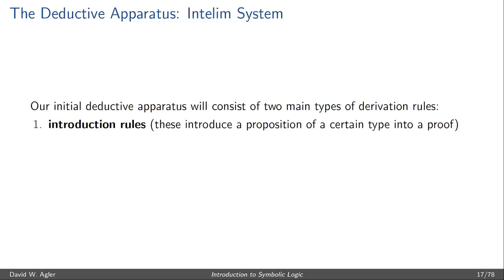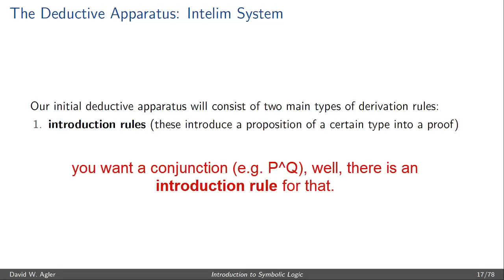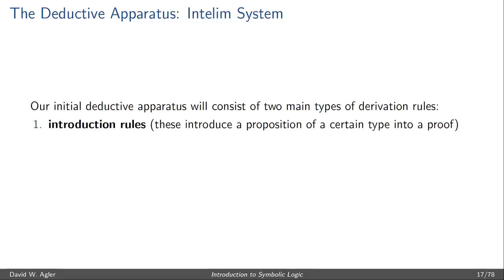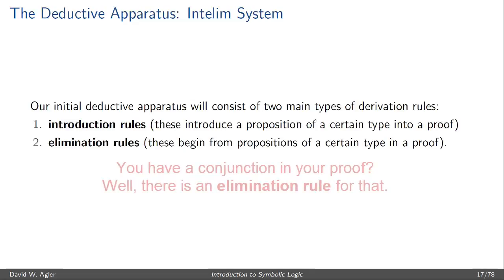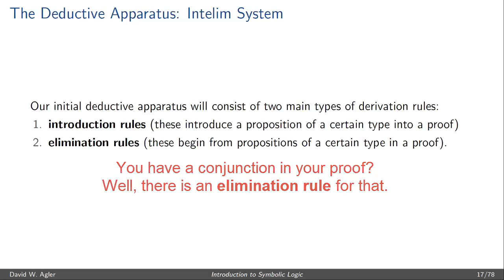There will be introduction rules corresponding to conjunctions, disjunctions, and conditionals — these rules allow us to derive those formula types into the proof. There are also elimination rules. Elimination rules don't remove conjunctions or conditionals; instead, they allow us to reason from those well-formed formulas. So there will be an elimination rule for conditionals and an elimination rule for conjunctions.